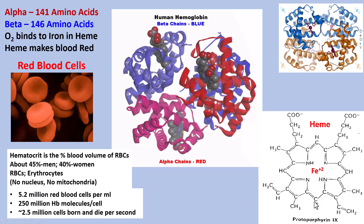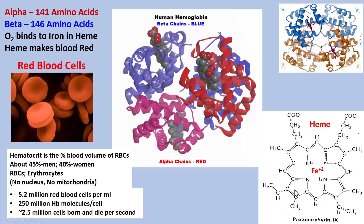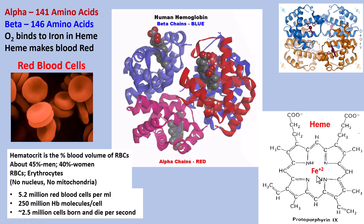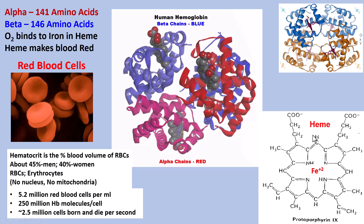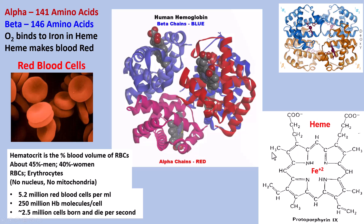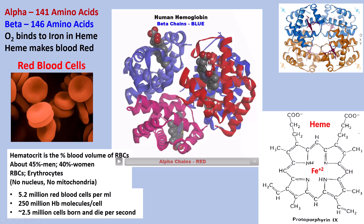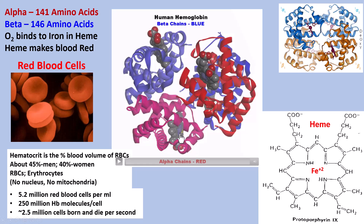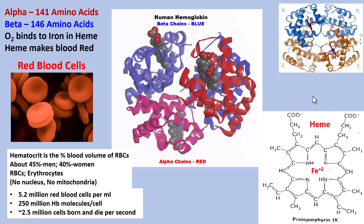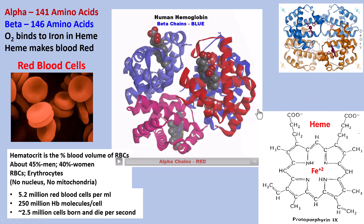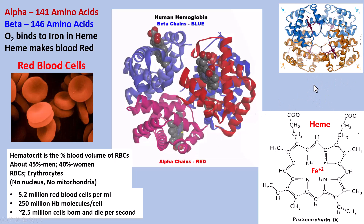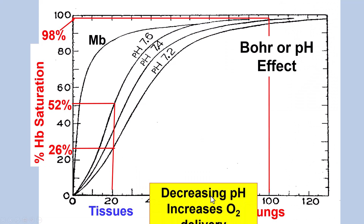The protoporphyrin 9 ring with a ferrous iron bound in the center makes it a heme. That heme group is visible here in this structure. When hemoglobin binds oxygen, it moves — so it's sort of like the hemoglobin is actually breathing.